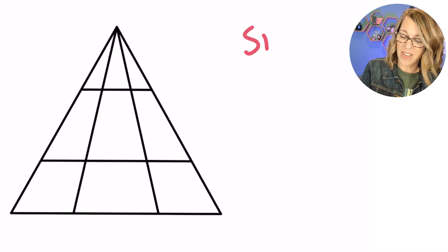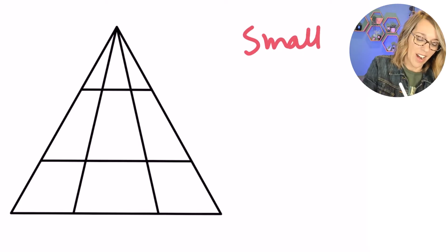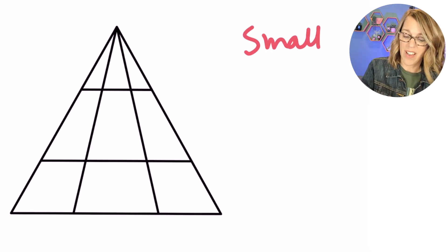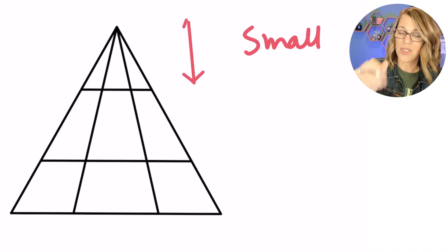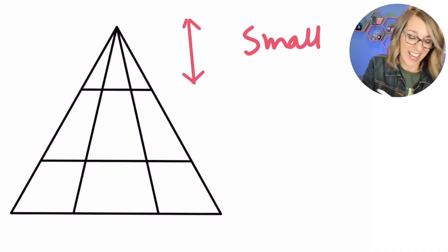The triangles that have the smallest height are going to have the height that goes from the top of the big triangle down to that first horizontal line.